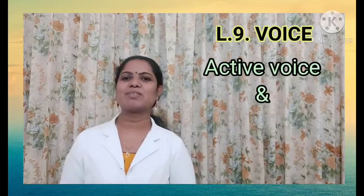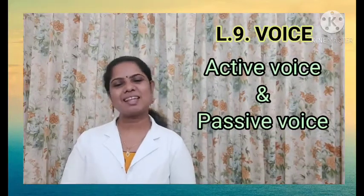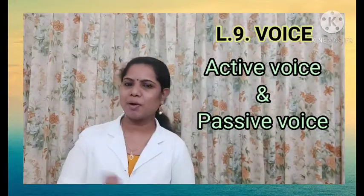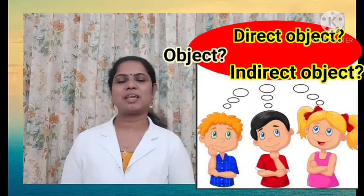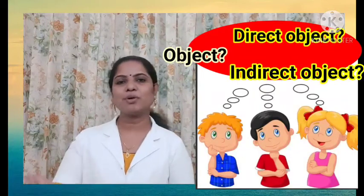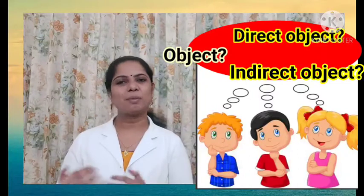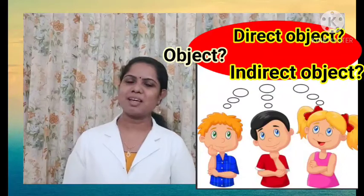Today, let's discuss lesson 9, Voice, from our grammar text. You already know what is a voice — you have studied active voice and passive voice. Still, let's learn voice in detail. But before moving to the main heading Voice, let's know what is an object. So in today's session, we'll study what is an object, what is a direct object, what is an indirect object, and how both these objects are different, and how we can identify an object in a sentence.